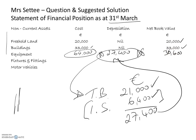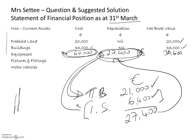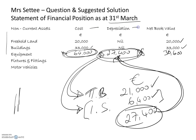That's the way depreciation is always calculated. You get the cost figure from the trial balance. The accumulated depreciation figure you have to work out: you get part of the figure from the trial balance and the remaining part from the income statement, add them together, and take this new increased figure away. So it's: cost minus accumulated depreciation equals net book value.